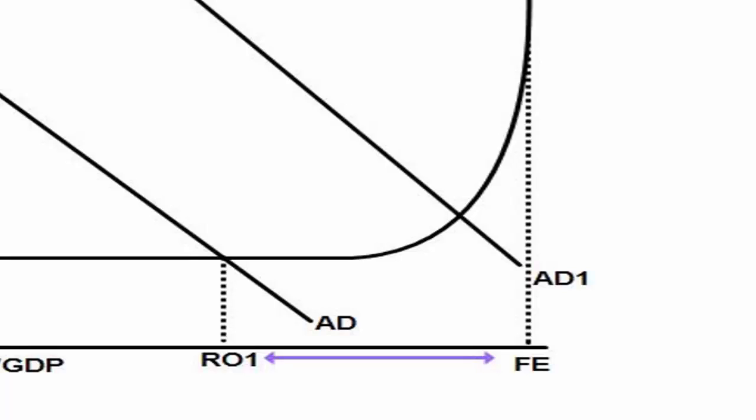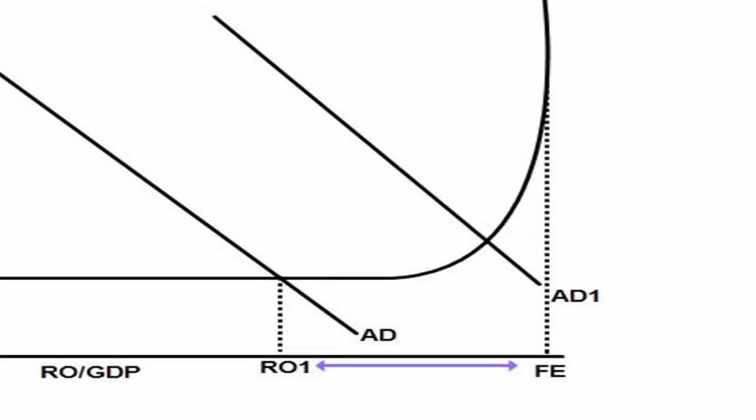We've already said that FE is full employment of resources so anything to the left of that along that x-axis up to zero is unemployment and we can show that on a macro graph as well. So for example if we take RO1 which is where AD, the initial AD curve, hits the LRAS curve, that gap between RO1 and full employment is that degree of unemployment. There's obviously a smaller unemployment gap between AD1 and full employment which I've not marked on this graph but you can see that gap is going to be a lot smaller. So that shows different degrees of unemployment.